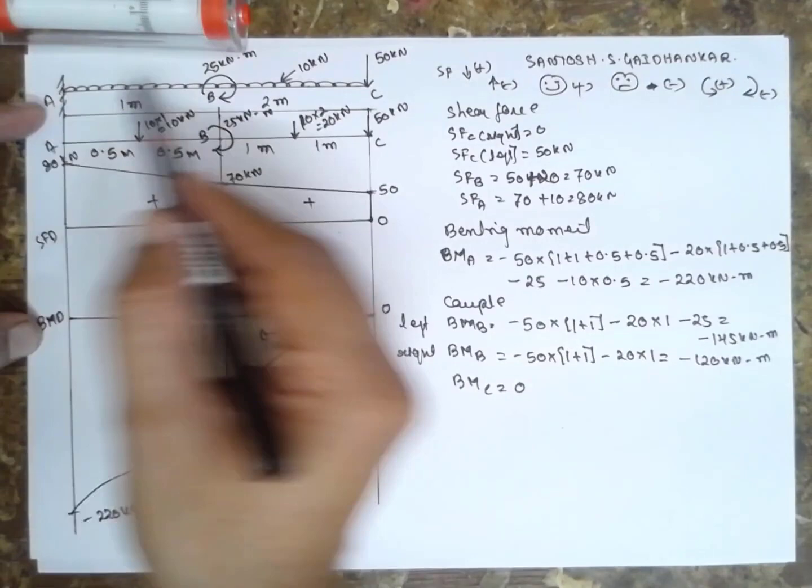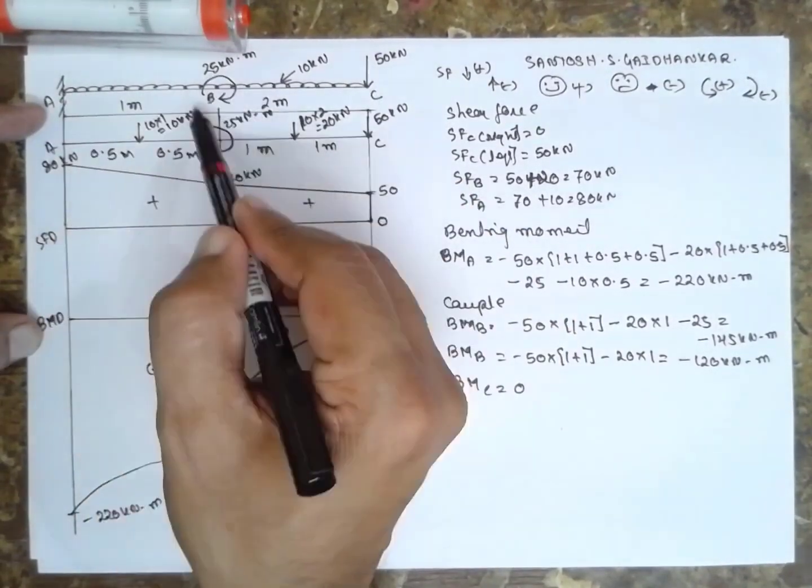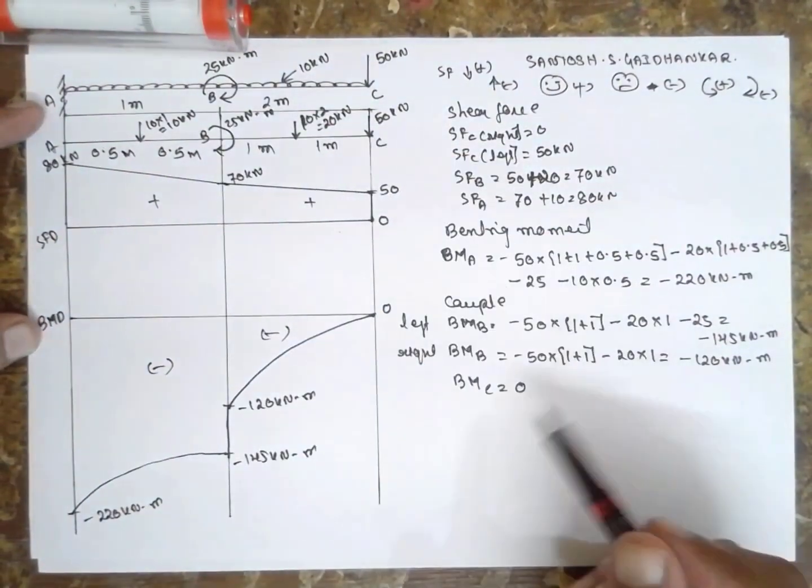This is how to solve a cantilever beam subjected to uniform distributed load, a couple, and point load.